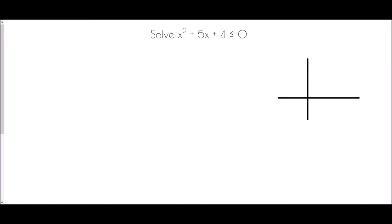We have been asked to solve x squared plus 5x plus 4 is less than or equal to 0. With this being a quadratic, our first protocol should be to think about factorising. Can we factorise this expression in order to solve it? If we want to factorise it, we want to find a pair of numbers which are going to multiply to make plus 4 but add to make plus 5.